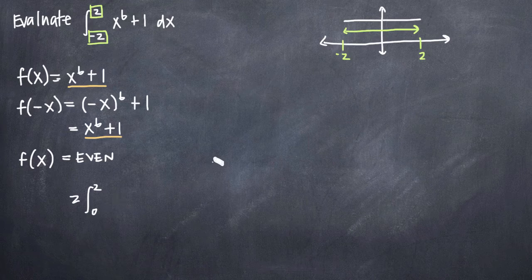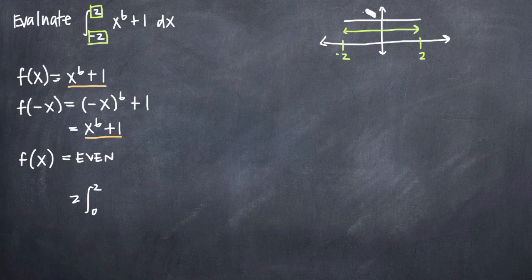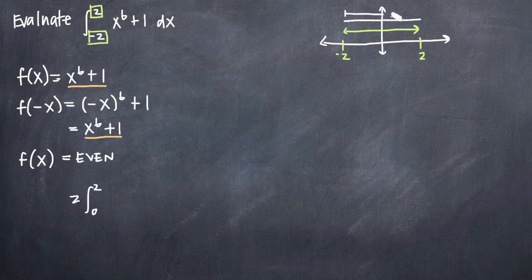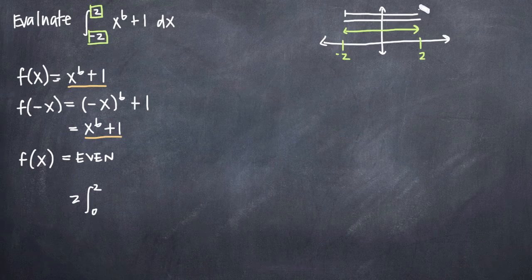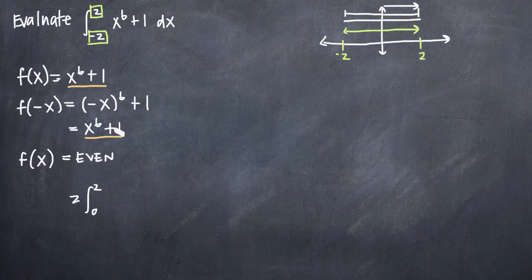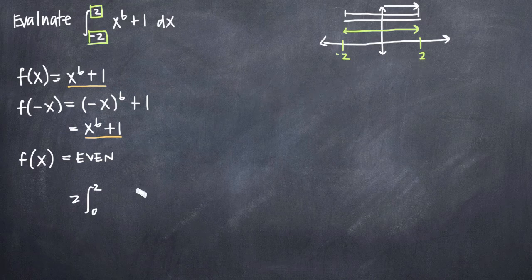we can go ahead and evaluate from 0 to 2 and just multiply by 2. And the reason is because since we know that the function is even, that means that we know that the function is symmetrical about the y-axis. And if it's symmetric about the y-axis, that means we're going to have the same area in this range as we are in this range. And so we can just take the area on this range here and multiply it by 2. And it's the same thing as taking the area from negative 2 to positive 2.